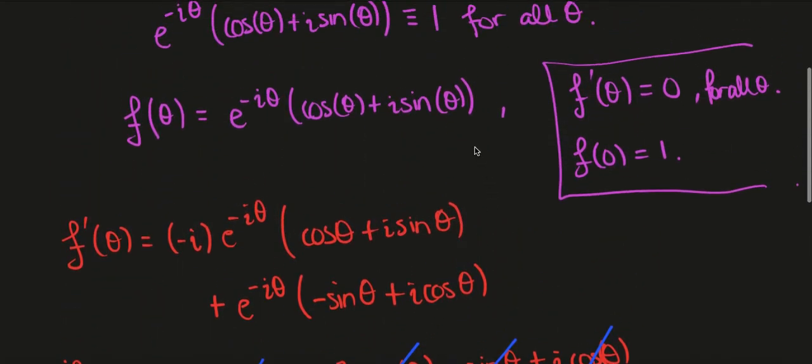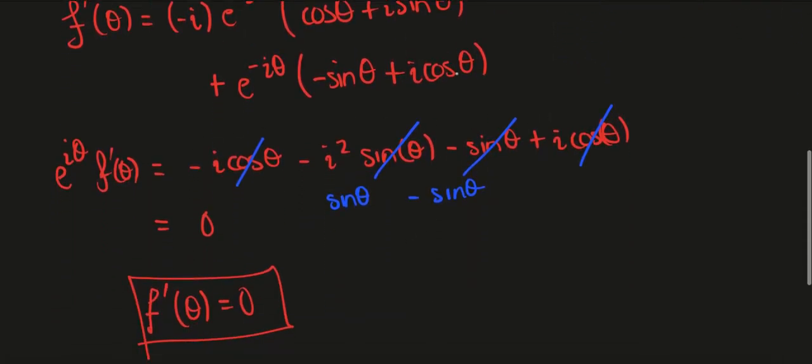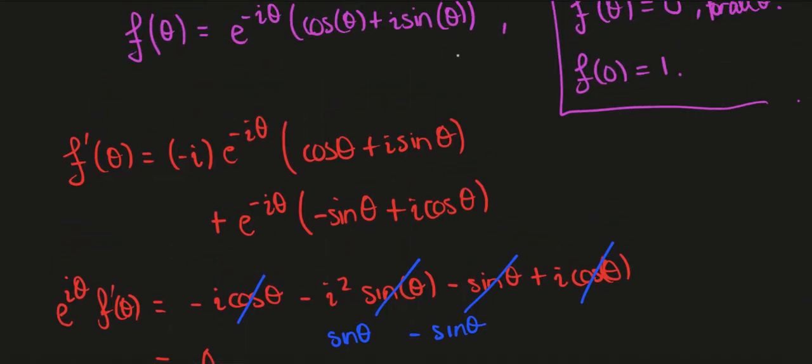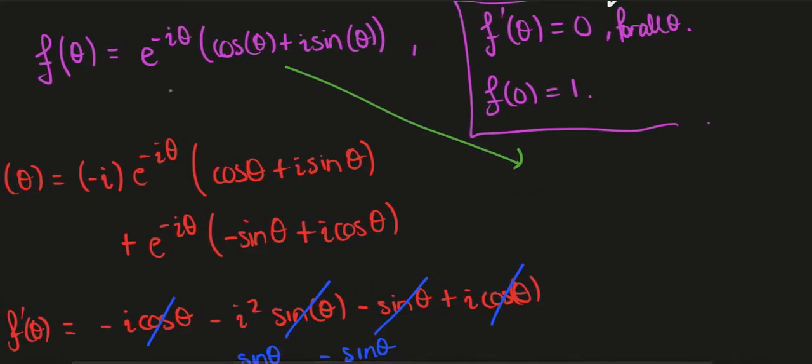So from this we see that f prime of theta is 0, so that's the first part done. This is true independent of theta because all the terms cancel. Now all that remains is to show that f of 0 is 1, but that's rather straightforward